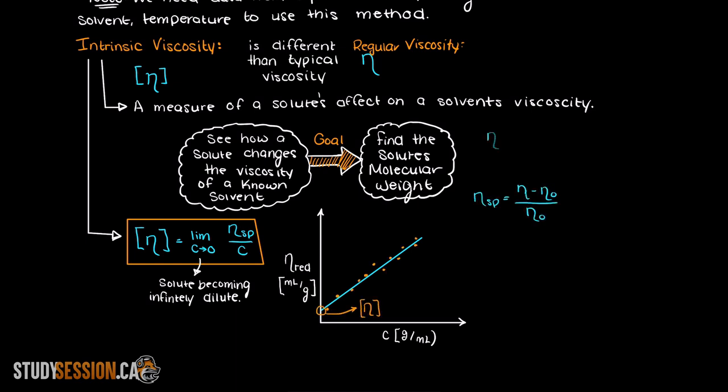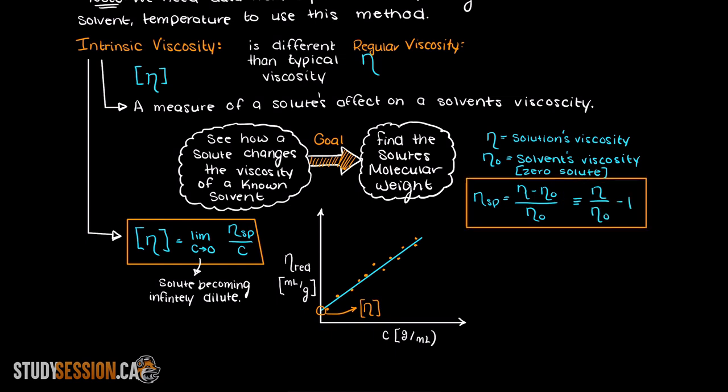The reduced viscosity is simply the specific viscosity over the concentration. The specific viscosity is the solution's viscosity minus the solvent's viscosity over the solvent's viscosity, which can also be written more simply like this.